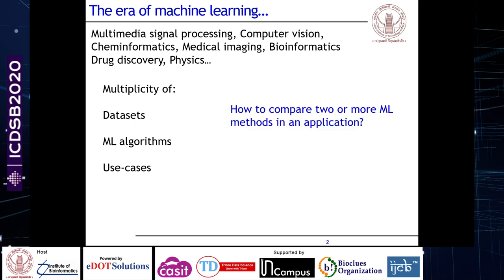The implication I wanted to focus on is: how do we really compare two or more machine learning methods in an application? This question might sound innocent and trivial, but it's not. There are a few aspects that go into comparing machine learning algorithms and drawing conclusions from that. The application could be face detection, sequence analysis, and so on — the principles I'm going to discuss are quite general purpose.